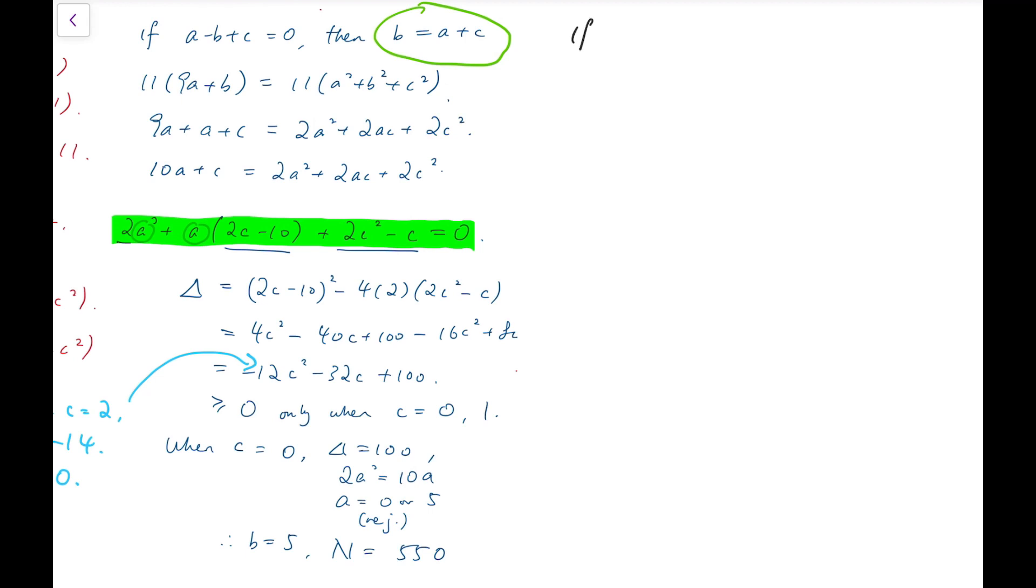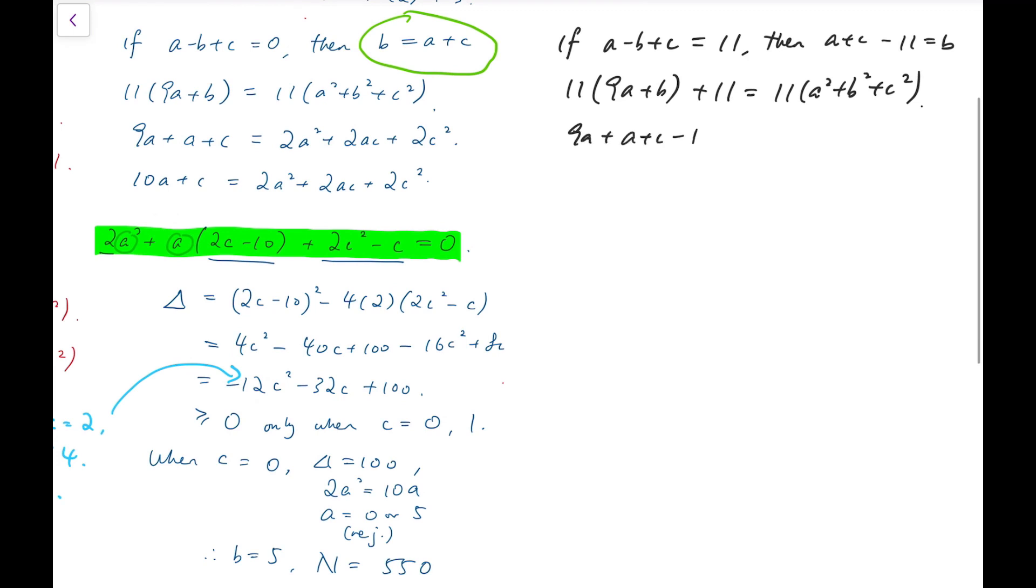Now that's the first case, and I'm going to consider the second one, which is that if this expression now takes value 11, not 0 anymore. And the equation is, a plus c minus 11 equals b. So then 11 times 9a plus b plus 11 equals 11 times a squared plus b squared plus c squared. So the 11s cancel out. So 9a plus a plus c minus 11 plus 1 equals a squared plus c squared plus a plus c minus 11 whole squared.